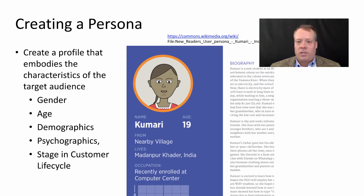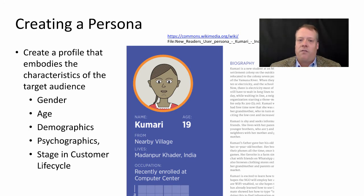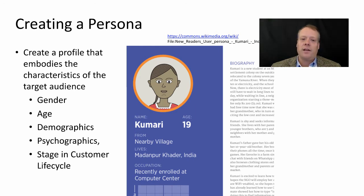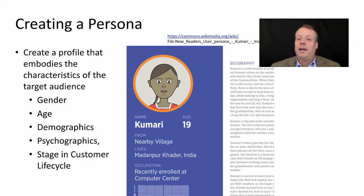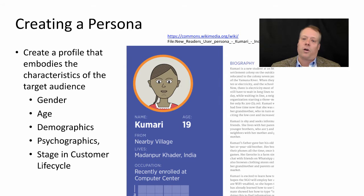So how do you create a persona? We discussed this a little bit in some of the other discussions, but basically you try to write a very realistic description of the person you're trying to reach out to. The profile should talk about things like gender, age, other demographics, psychographics, what the person believes, and what their stage is in the customer life cycle. For example, here with Kamari, age 19, from a nearby village but living in Madhampur, Qatar, India — it's looking at how they use technology and what kinds of ways you might reach out to them for additional technology purchases they might be willing to make in the near future.